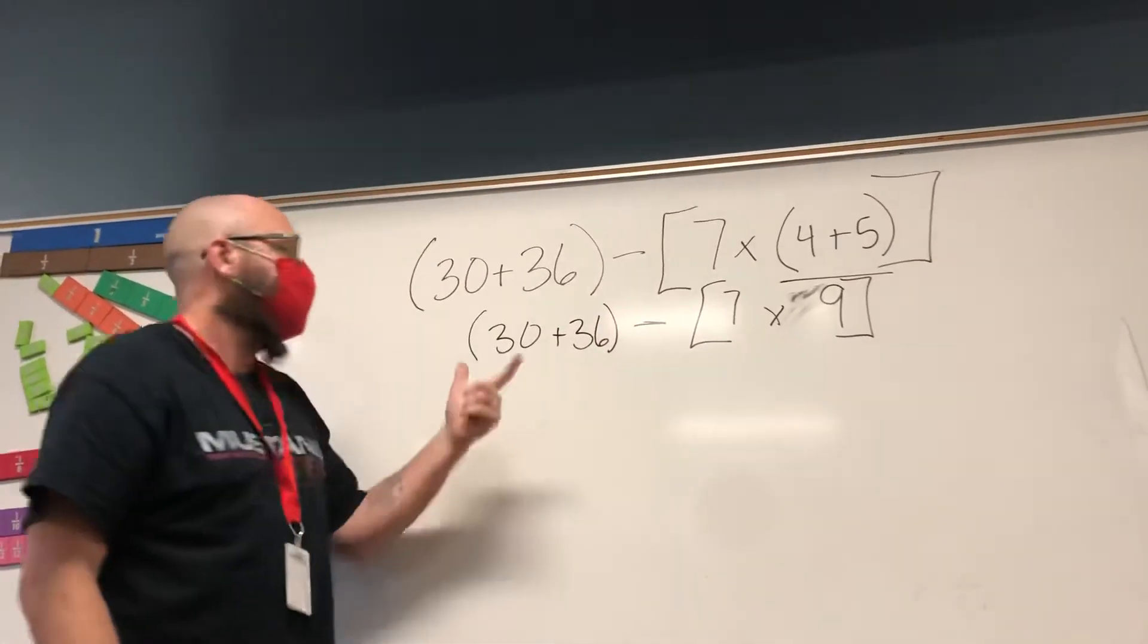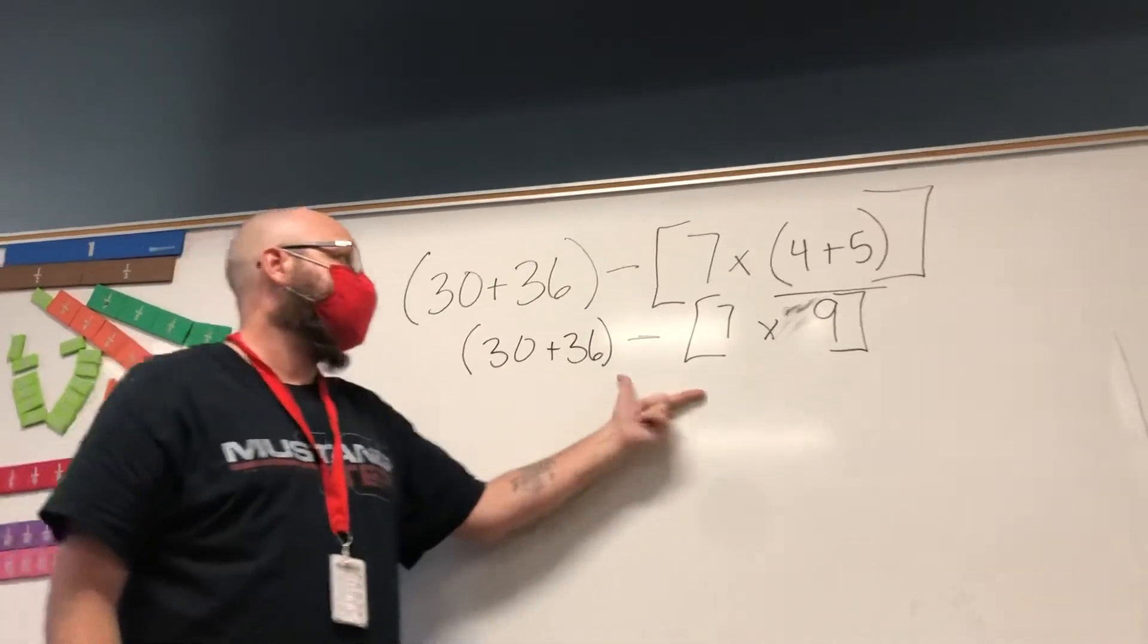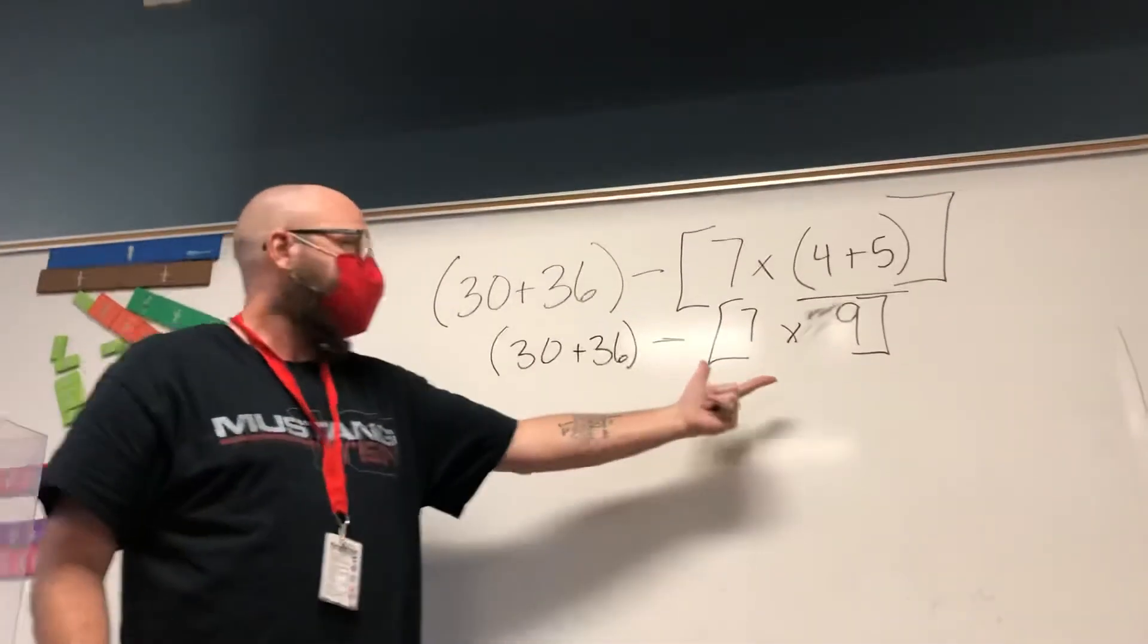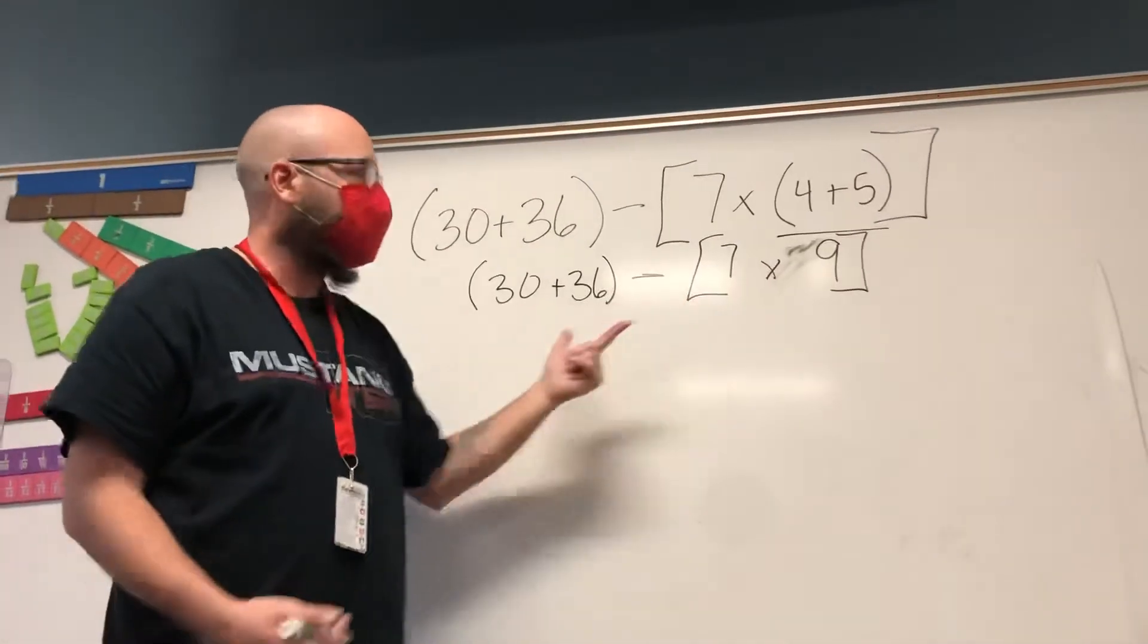So now I have the sum of 30 and 36 minus the product of 7 times 9. I could do either one of these. Let's do this one first.